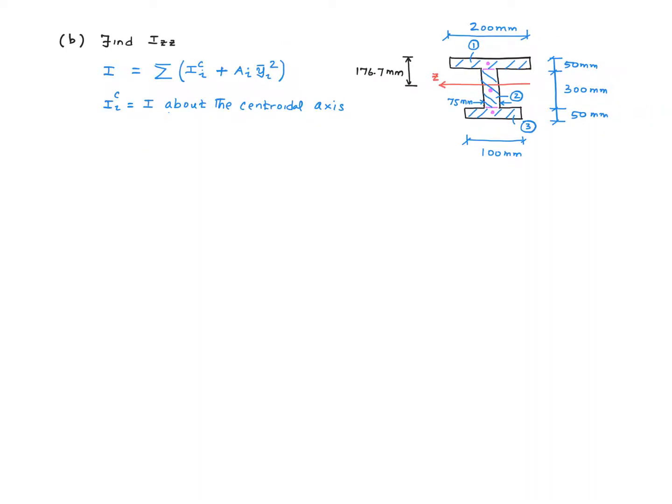The second major task in solving the problem is finding the second moment of inertia about the z-axis. And you might recall this equation applicable to composite sections. And this equation is based on the parallel axis theorem. And here iiz is the second moment of inertia about the centroidal axis for that particular subsection i. ai is the area of the subsection i. yi-bar is the distance to the centroid of the subsection from the global z-axis.